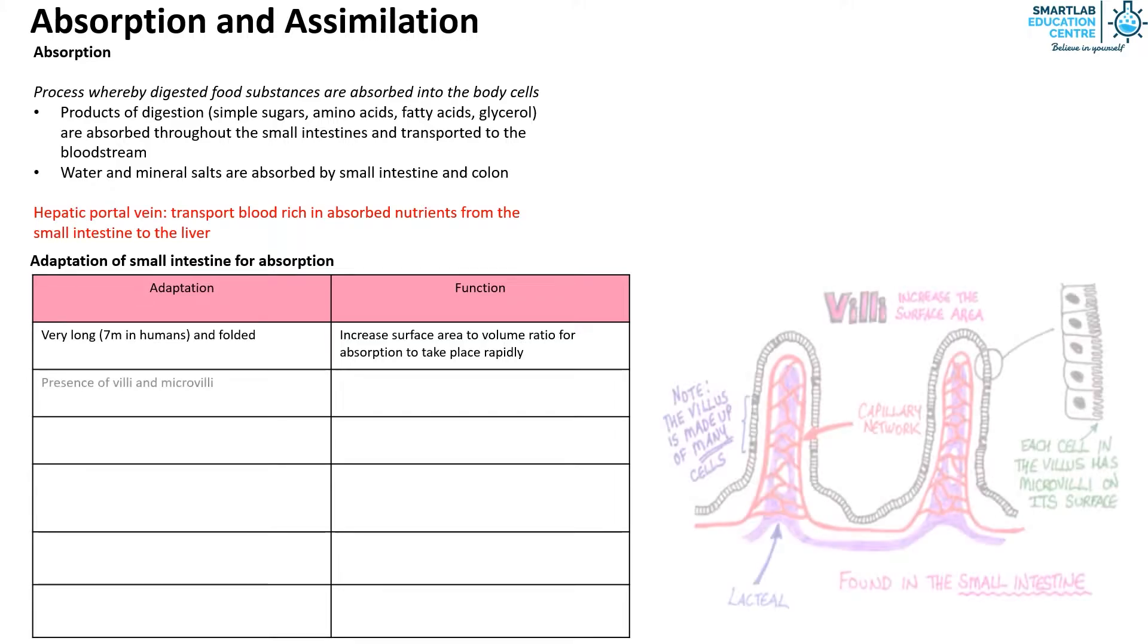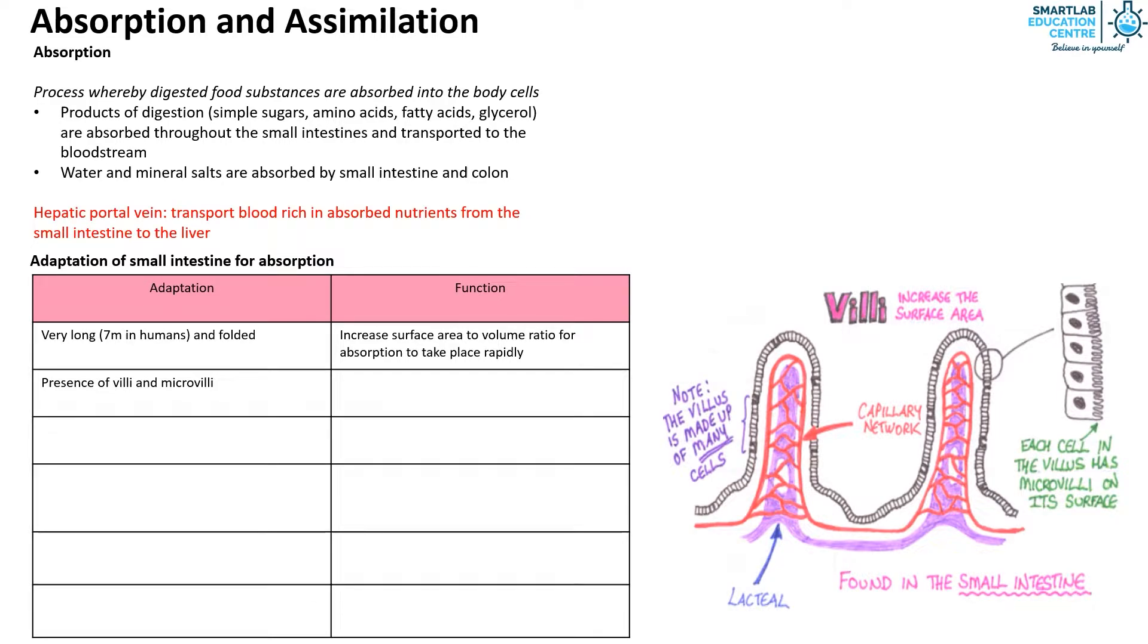There is the presence of villi and microvilli, and these protrusions in the intestinal wall further increase the surface area.